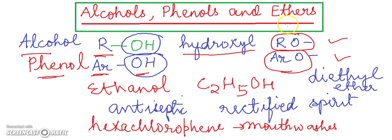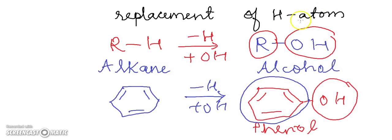Now we will understand how these are formed. These are formed by the replacement of the hydrogen atom. Alcohols are formed by the replacement of the hydrogen atom by the OH group. So here from the alkane, we have this alkyl substituent and here hydrogen atom.